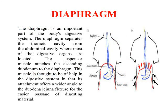The diaphragm is an important part of the body's digestive system. The diaphragm separates the thoracic cavity from the abdominal cavity, where most of the digestive organs are located. The suspensor muscles attach the ascending duodenum to the diaphragm.